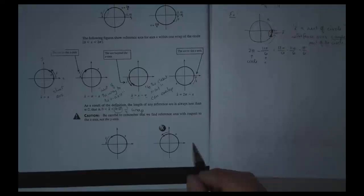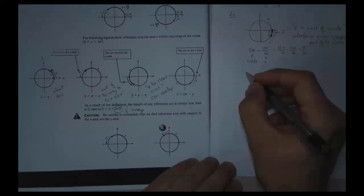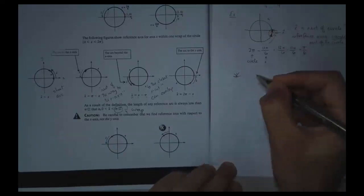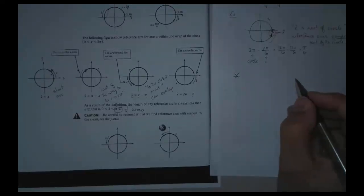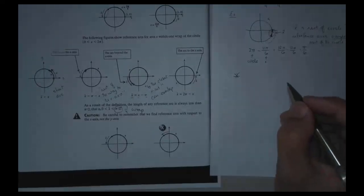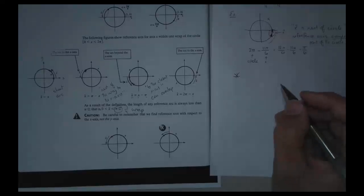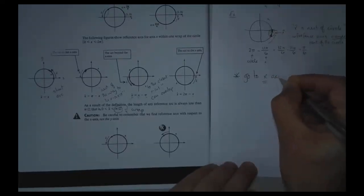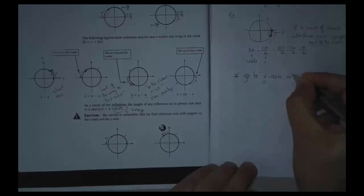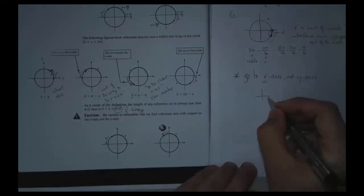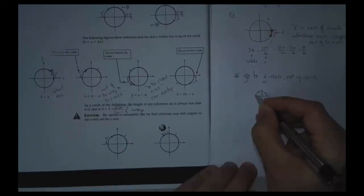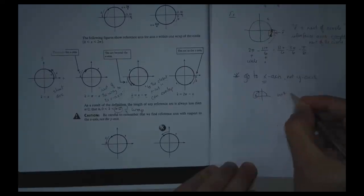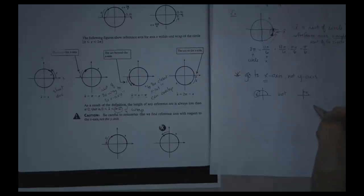Caution — I had better take notes on that. The caution is: be careful to remember that we find reference arcs with respect to the x-axis, not the y-axis. That's a mistake I just made. So: go to x-axis, not y-axis. The picture is saying I go like this, not like this — I don't continue on to the y-axis. That makes sense.